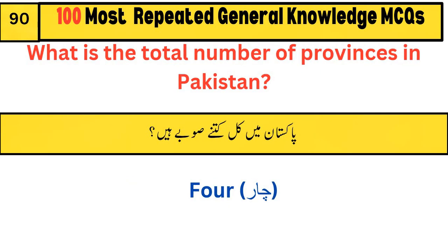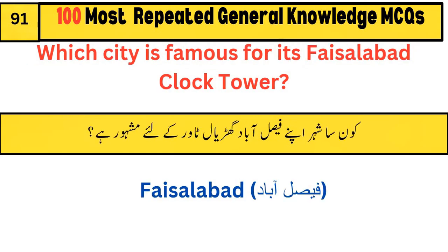What is the total number of provinces in Pakistan? 4. Which city is famous for its Faisalabad clock tower? Faisalabad.